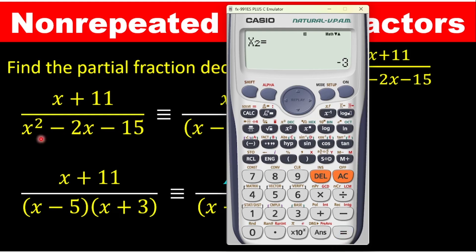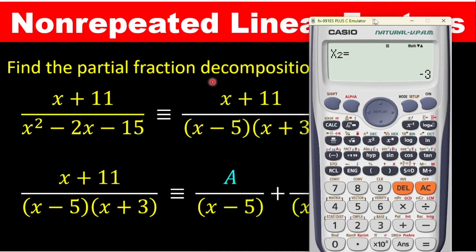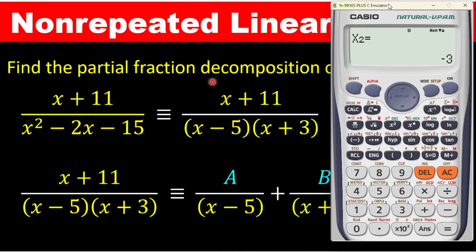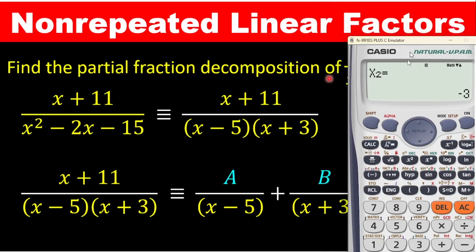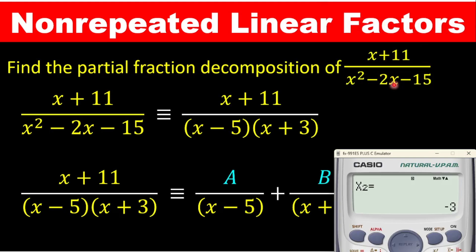That is how we resolve the quadratic into each component. The first x value is 5, which means we have (x − 5), and the second x value is −3, so we have (x + 3). That is the first thing you need to do before using the calculator. Now that we have resolved the denominator, we have (x + 11) divided by (x − 5)(x + 3), which are the roots of the quadratic expression.